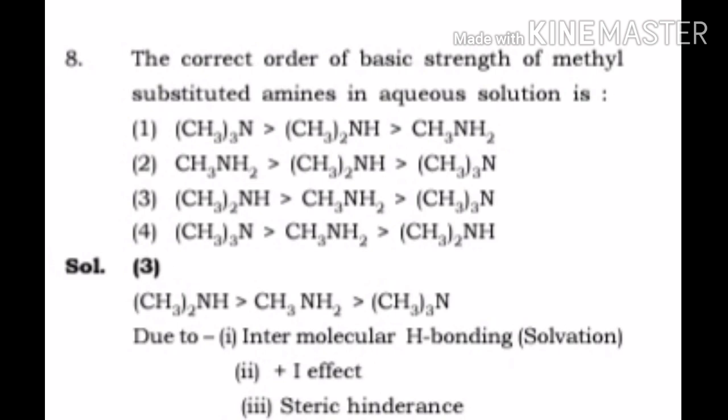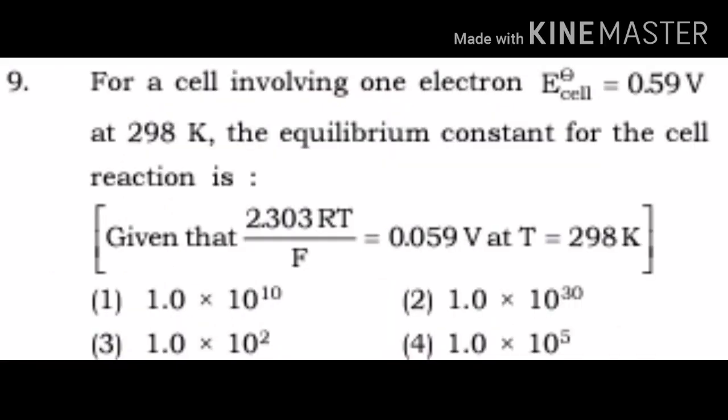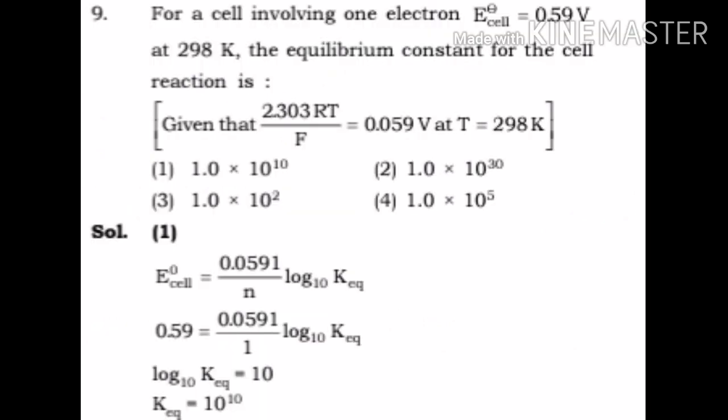Question number 9: for a cell involving one electron, E naught cell equals 0.59 volt at 298 kelvin. The equilibrium constant for the cell reaction is, given that 2.303 RT by F equals 0.059 volt at 298 kelvin: 1) 1 times 10 to power 10, 2) 1 times 10 to power 30, 3) 1 times 10 to power 2, 4) 1 times 10 to power 5.